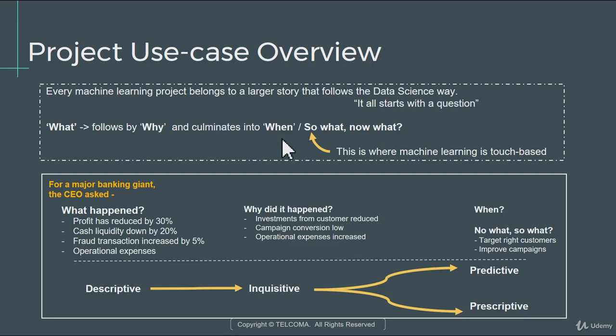The moment you have answers to why and you reach the part of when, so what, now what — this is where primarily machine learning problems are actually touched upon.